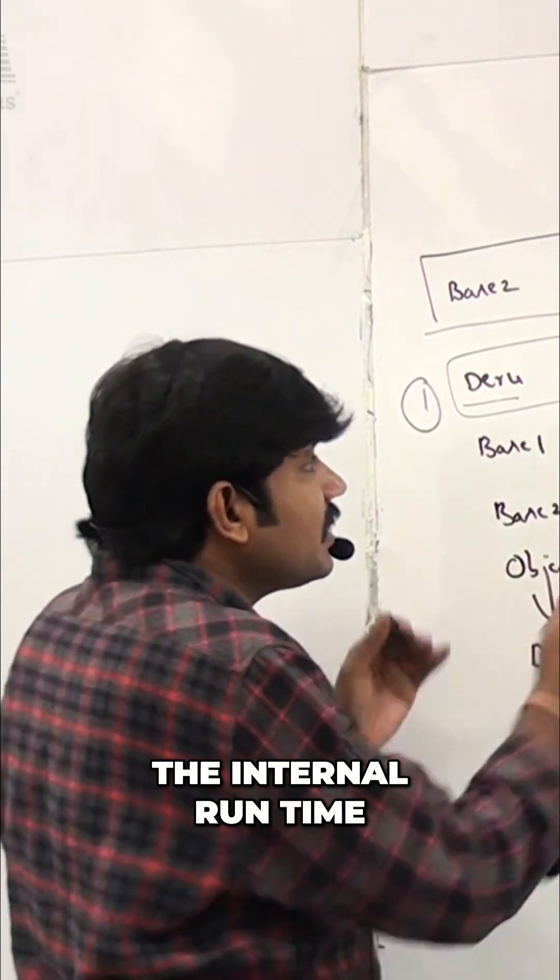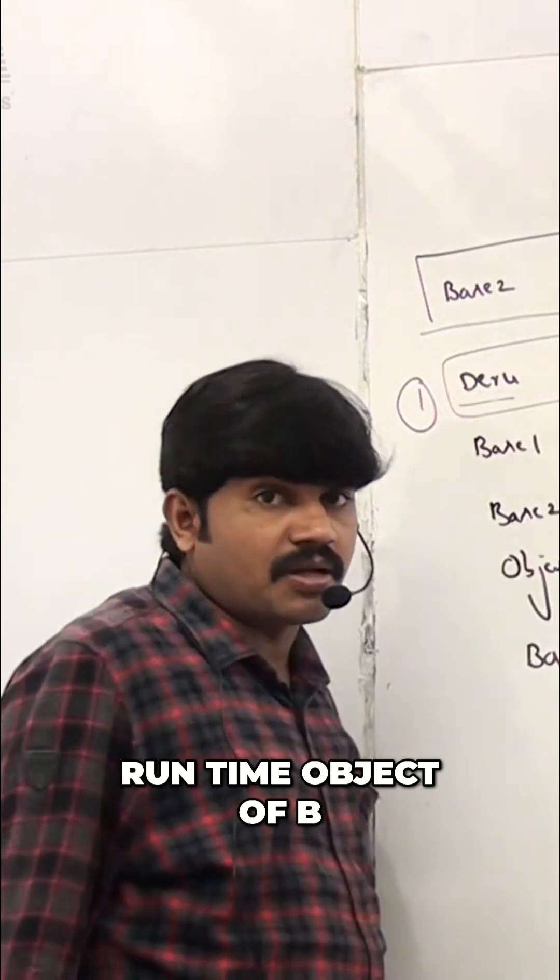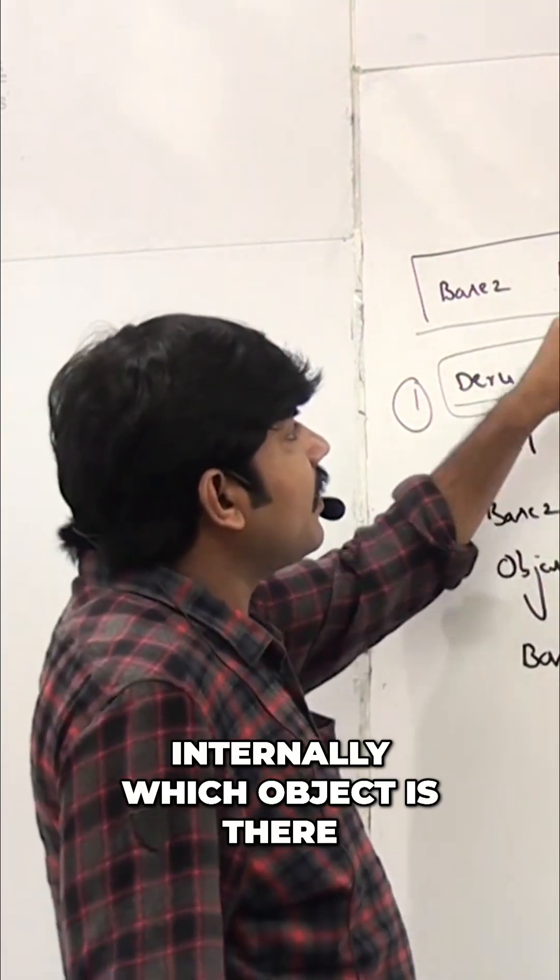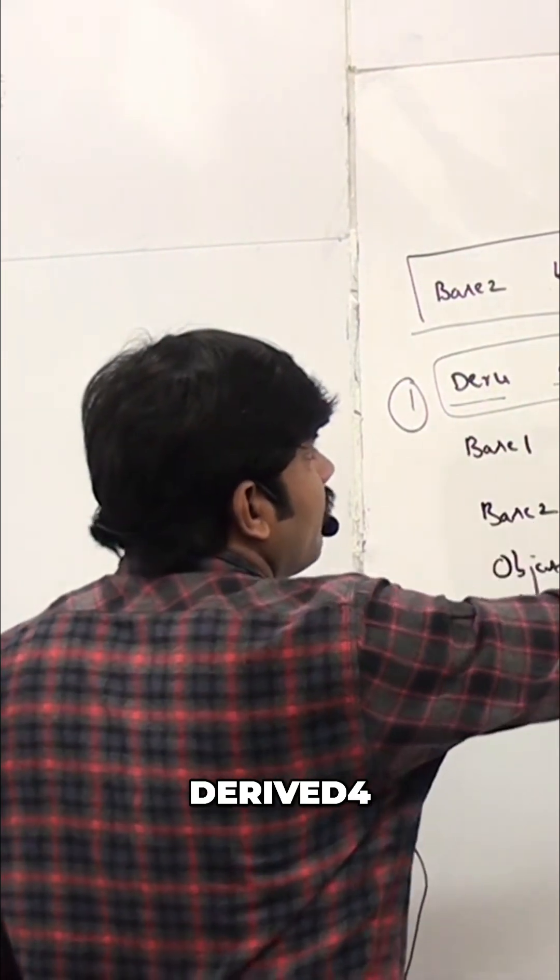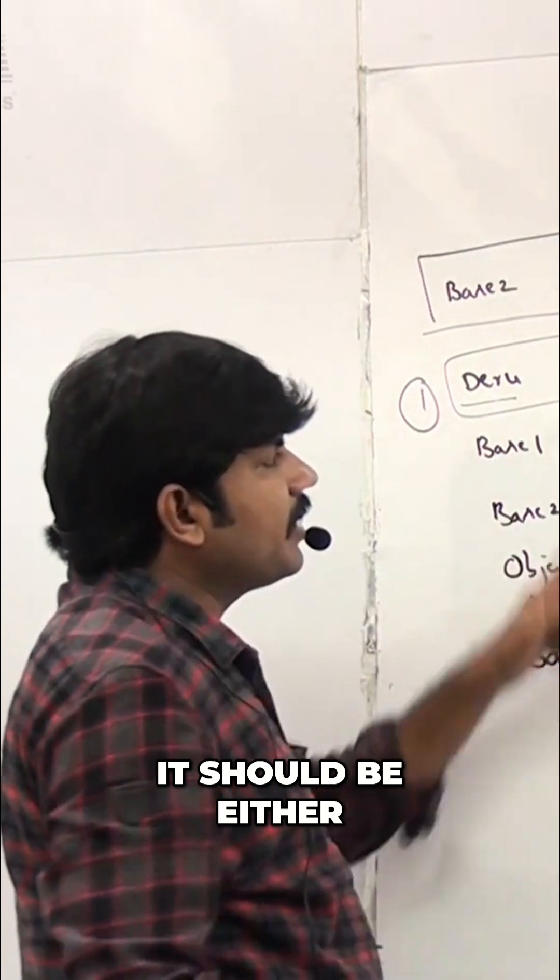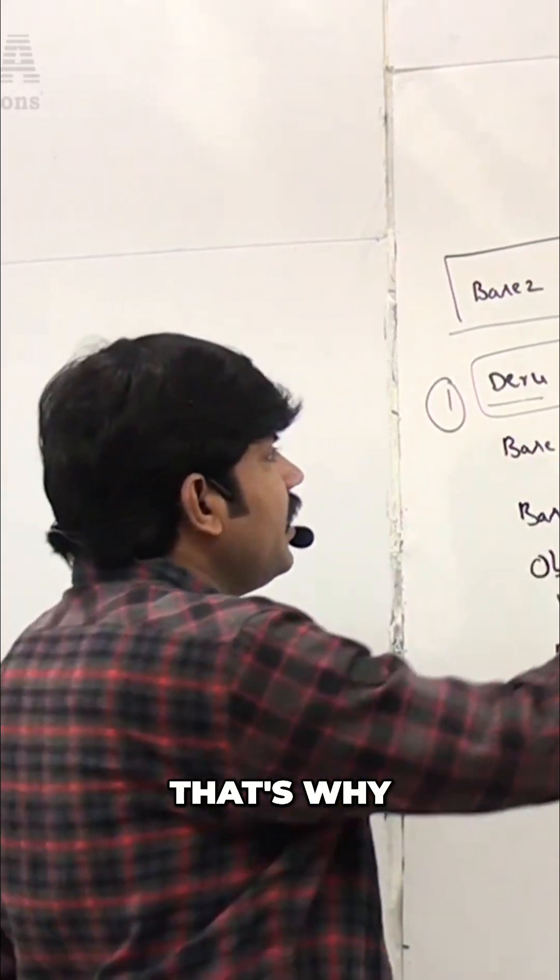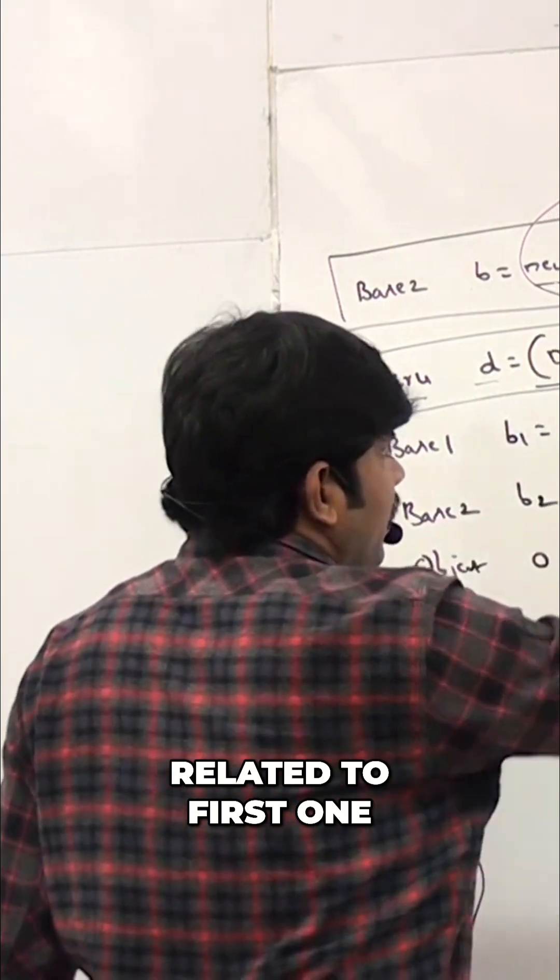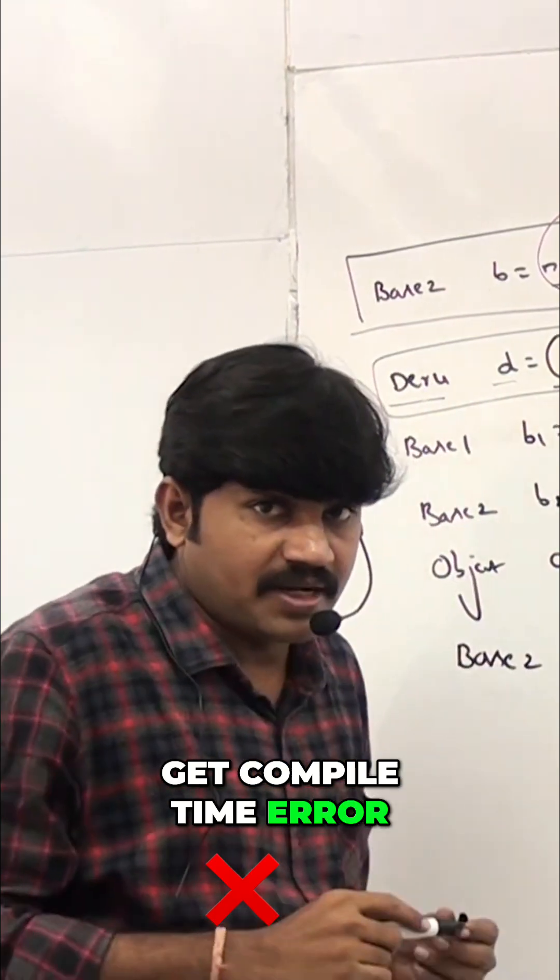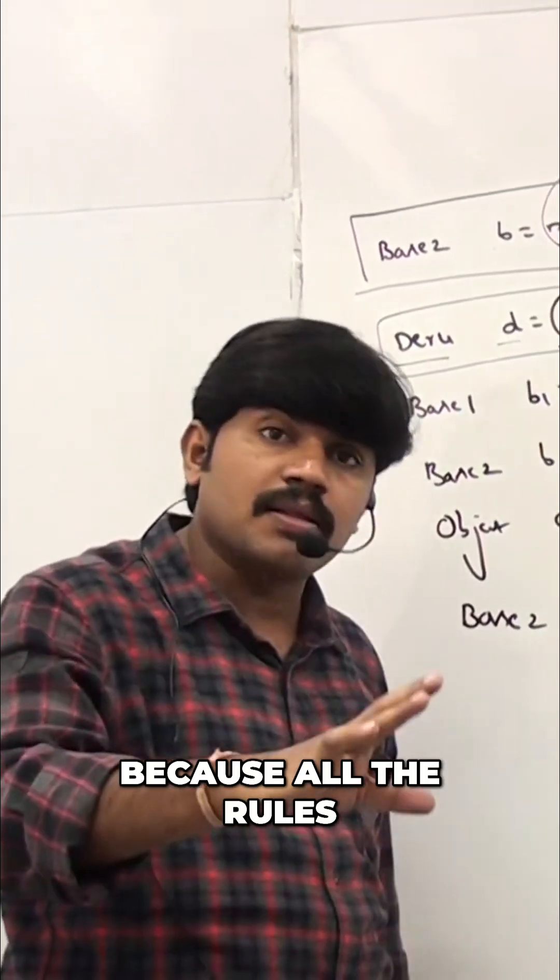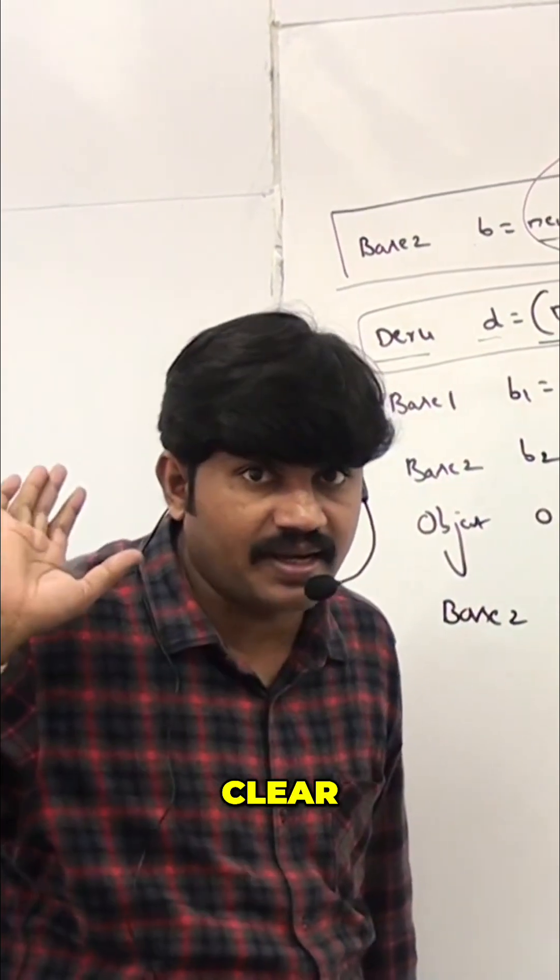the internal runtime object type. Runtime object of b, which object is there internally? Derived of 4. It should be either same or child of derived of 4. Yes, same. That's why we're never going to get a compatibility error, we're never going to get a runtime exception, because all the rules are satisfied. Clear?